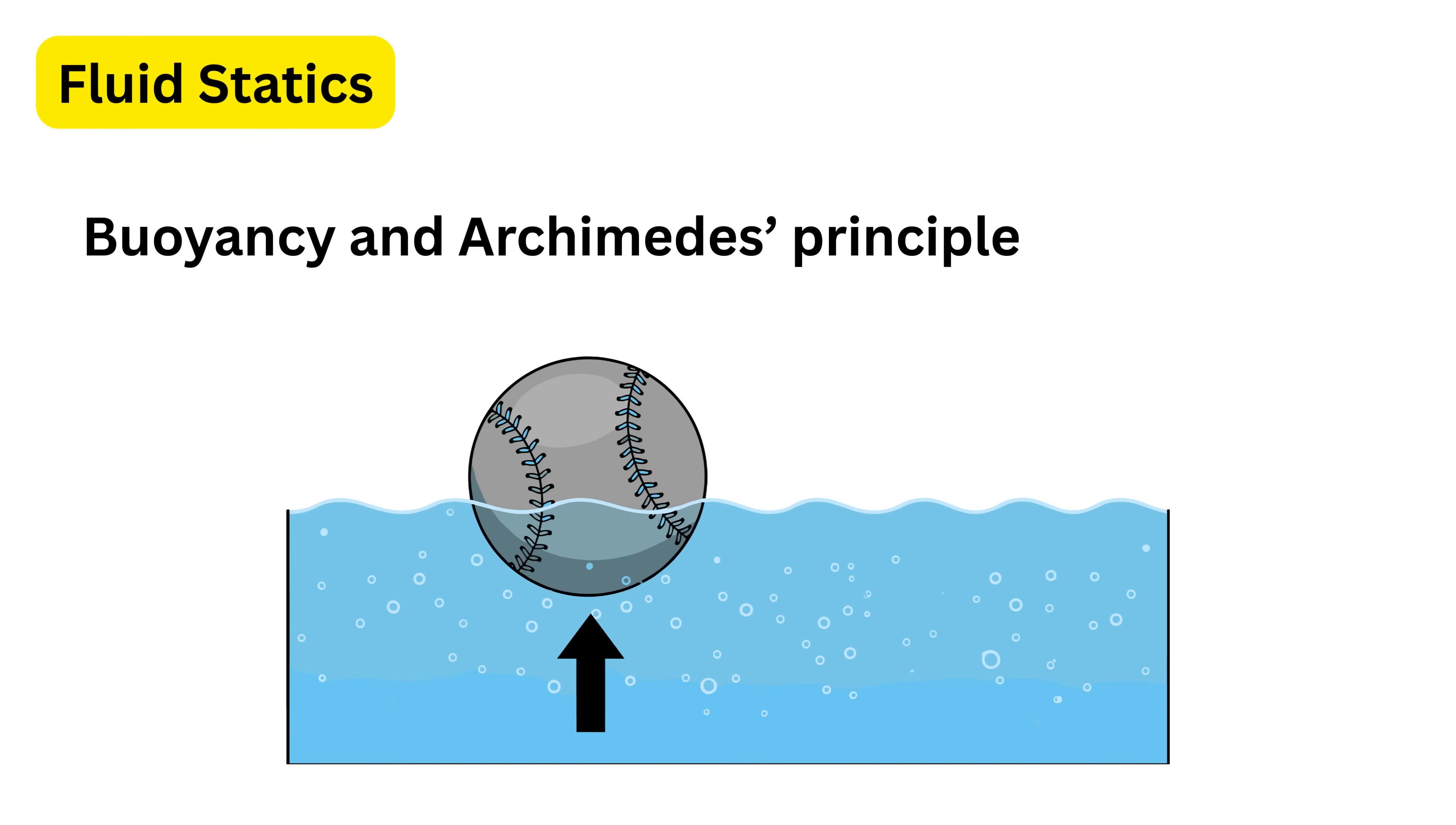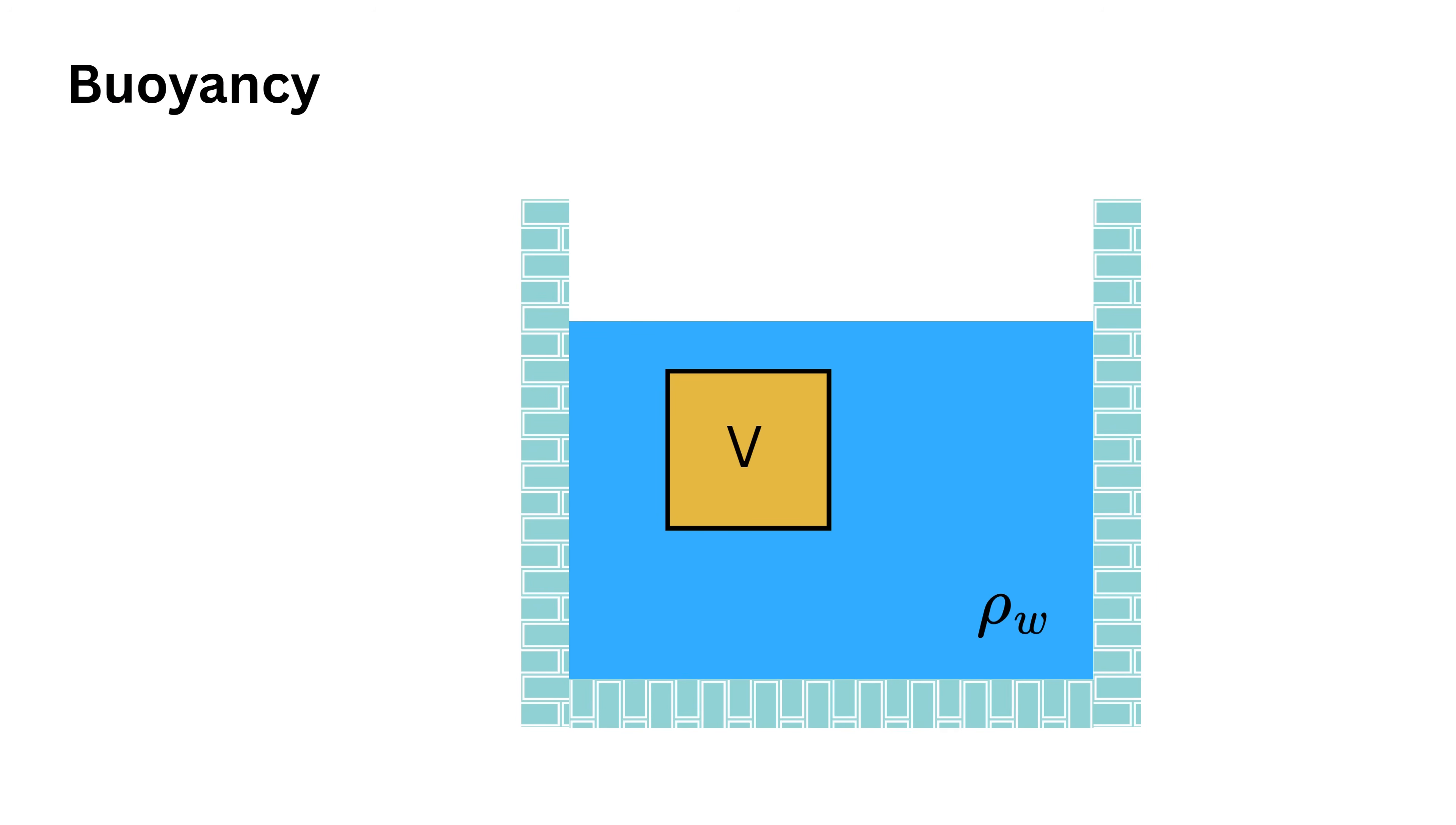Next up, we have buoyancy and Archimedes' principle that naturally come after understanding pressure in fluids. When an object is placed inside a fluid, the fluid exerts pressure on all sides of the object.